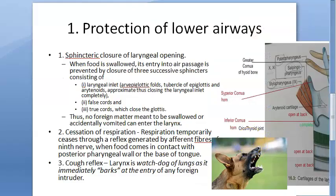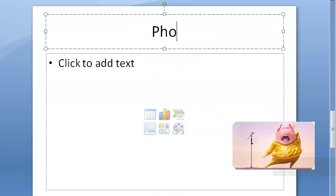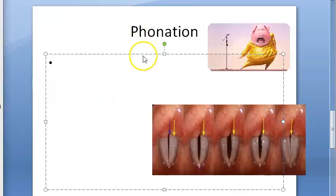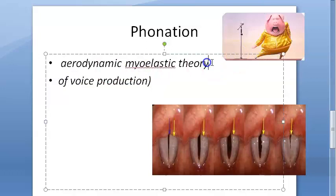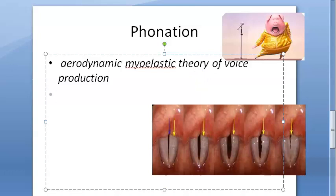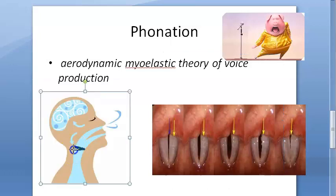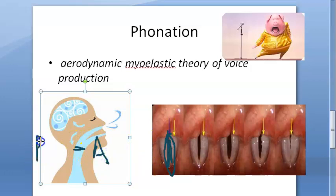Now let us look at phonation. The larynx functions like a wind instrument. Voice is produced by the aerodynamic myoelastic theory of voice production. According to this theory, the vocal cords are kept adducted — that is, together in the midline — so both cords are medial. Here you can see the vocal cords: this is the anterior end and this is the posterior end; they are adducted.